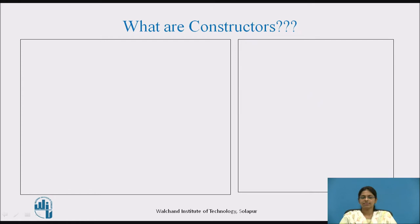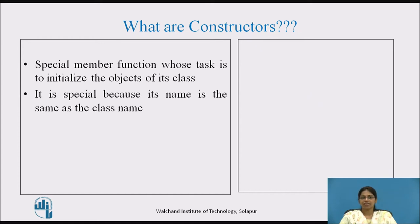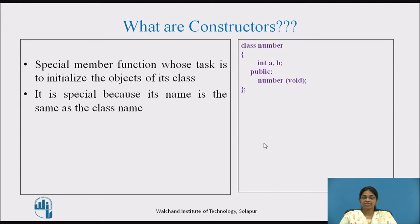What are constructors? Constructors are nothing but special member functions whose task is to initialize the objects of its class. These are called special because their name is the same as the class name. This can be best illustrated by an example where we have a class called 'number' with two data members A and B. Under the public section, we have a member function whose name is the same as the class name — so this is called a constructor.